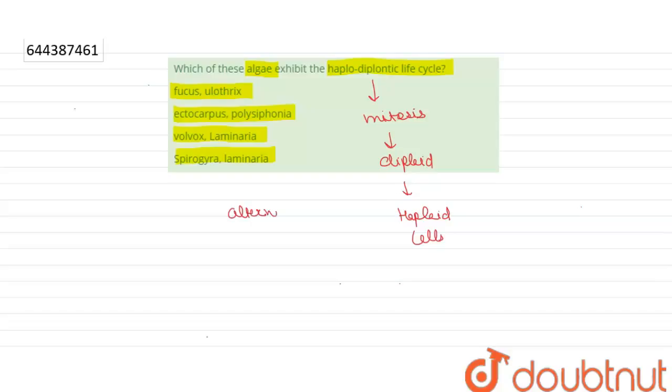The gametophyte is multicellular and haploid.